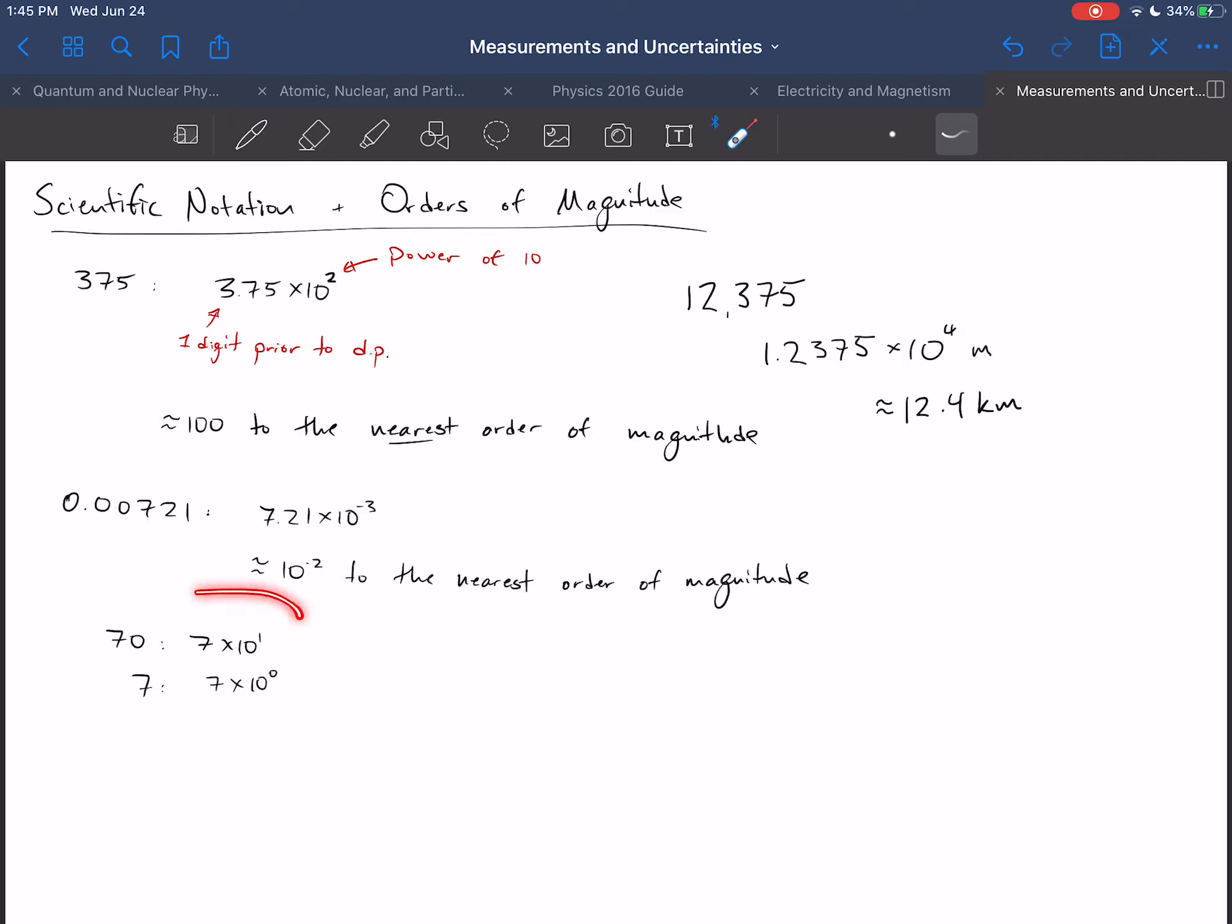Things to note is that 70 is 7 times 10 to the 1, and 7 is 7 times 10 to the 0. This means 1. 10 to the 0 means 1. So this is the 0th order of magnitude, this is the 1st order of magnitude, and so on and so forth. You can estimate the number 7 to the nearest order of magnitude as 10. You can estimate the number 7 times 10 to the 1 to the nearest order of magnitude as 100 or 10 to the 2.